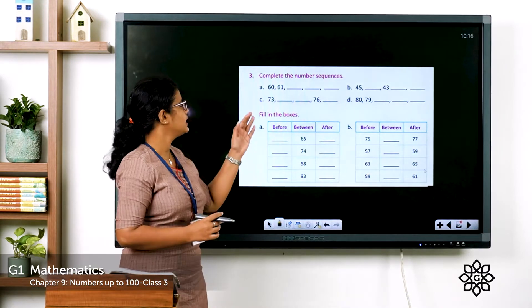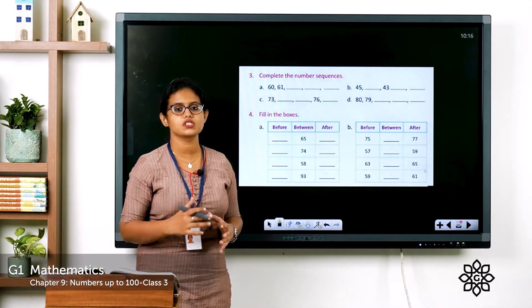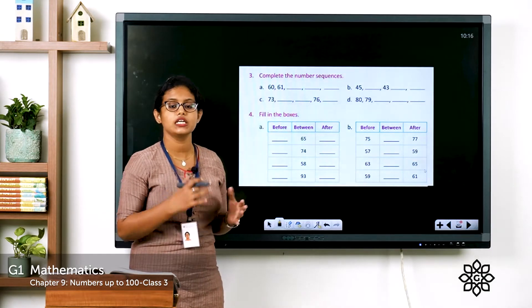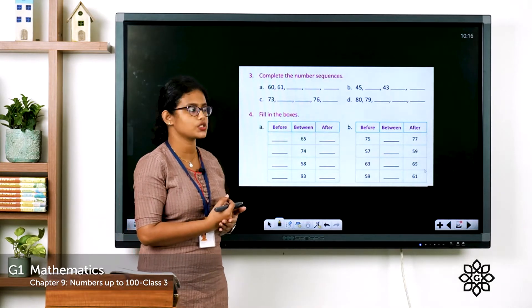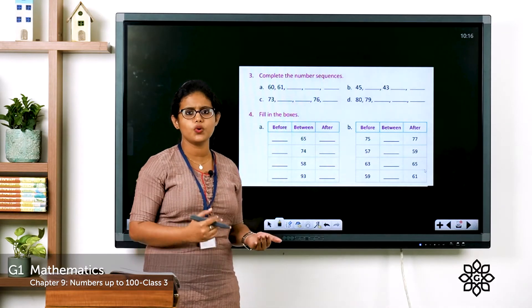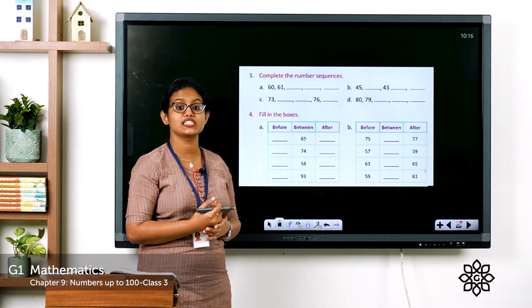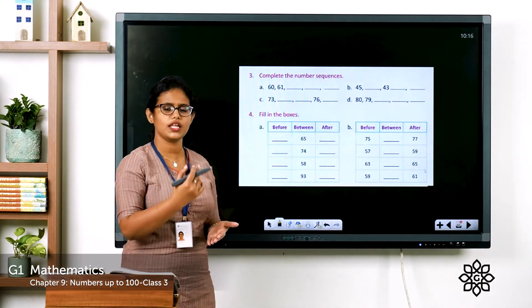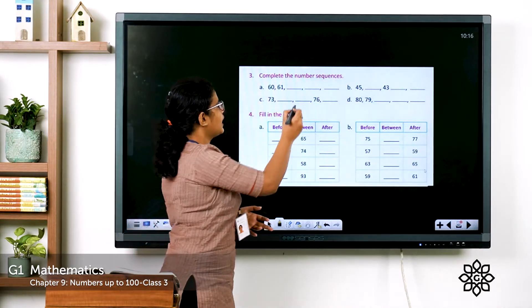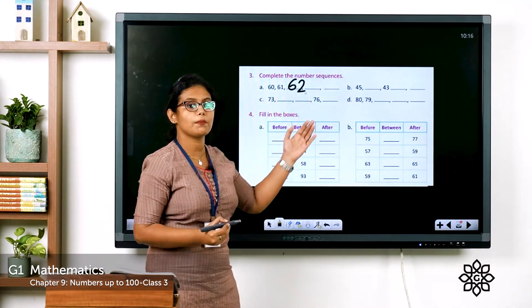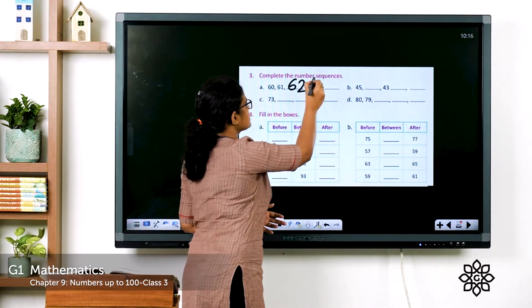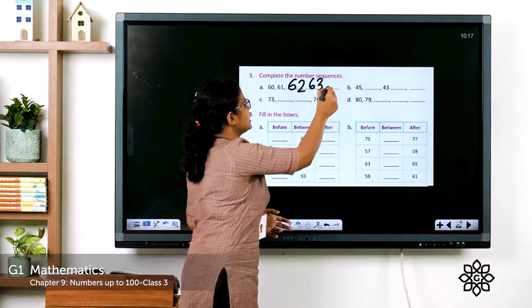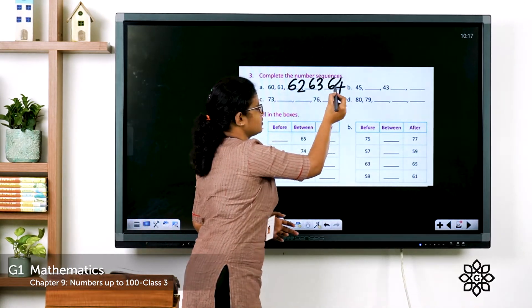Complete the number sequences. The first number given is 60. After 60 comes 61 — is it forward or backward counting? Forward counting. Then 62, 63, 64. You can fill in these blanks.